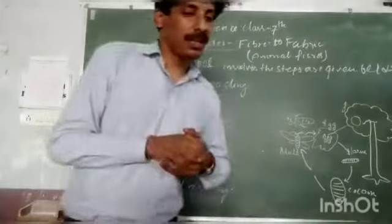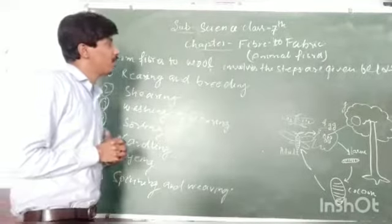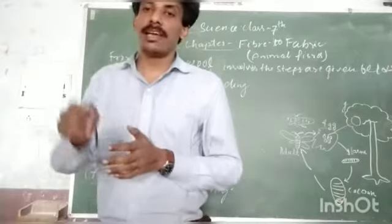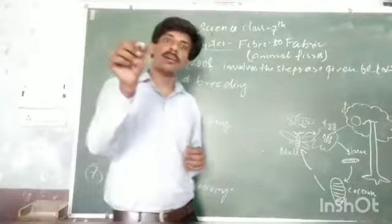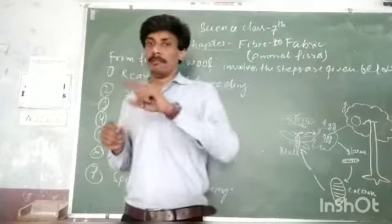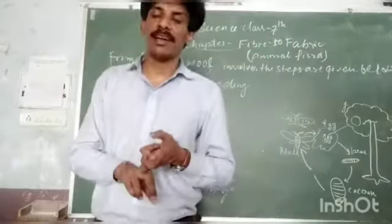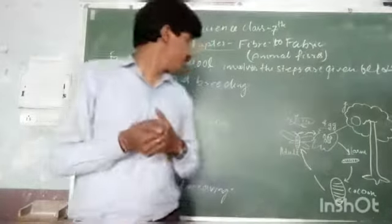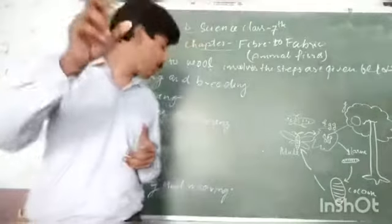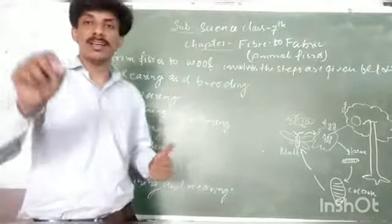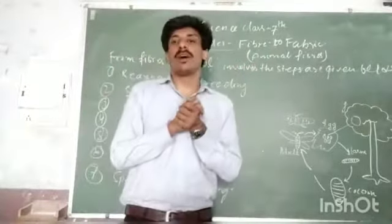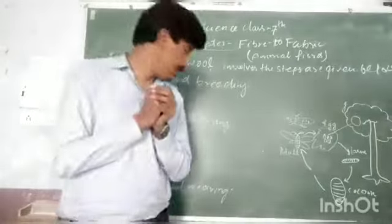The next process is dyeing. In India, number of varieties of sheep are found which give different colors of wool: mainly three colors - brown, black, and white. After dyeing, we can produce many different colored woolens for various uses.